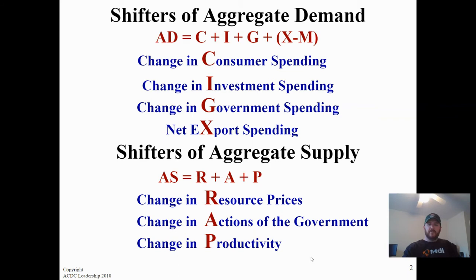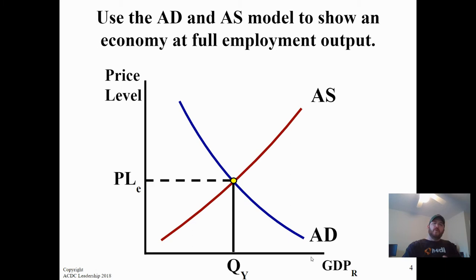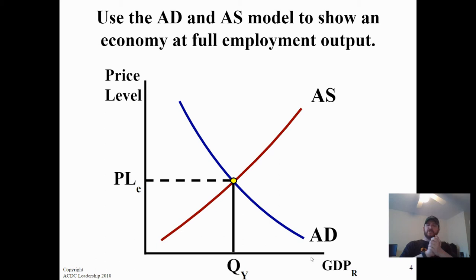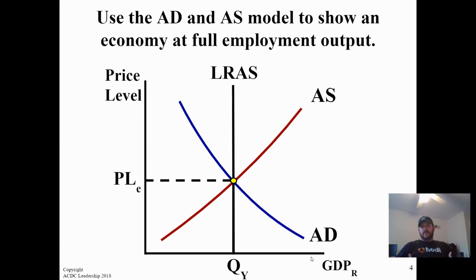Now let's put it all together on the same graph. We have short-run aggregate supply sloping up to the right, and aggregate demand sloping down to the right — where they combine gives us our equilibrium. The price level shows on the vertical axis and quantity or output on the horizontal axis. When we add the long-run aggregate supply curve, you'll always have all three curves on the graph at a time.